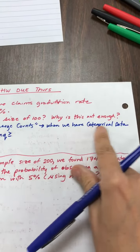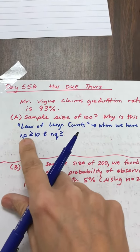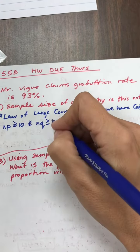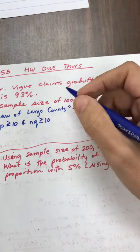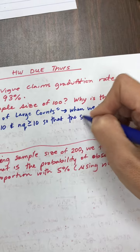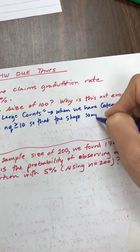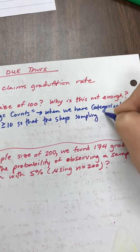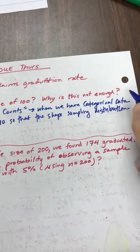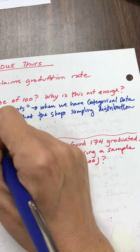The large law of count states that when we have categorical data, we need n times p to be greater than or equal to 10, and n times q, that's the complement, to be greater than or equal to 10, so that we can ensure that the shape of the sampling distribution, and so that's of p-hat, is approximately normal.